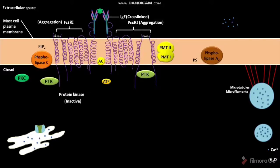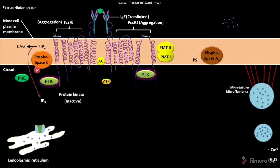This cross-linkage also causes PTK activation. The active PTK then causes phosphorylation of phospholipase C. In the presence of phosphorylated phospholipase C, the PIP2 is converted into DAG and IP3. The endoplasmic reticulum has calcium ion channels on its surface, and calcium ions are present in the lumen of the endoplasmic reticulum.